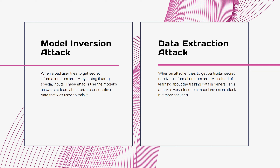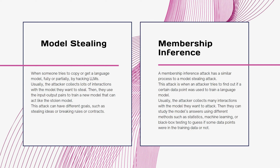A data extraction attack is similar to a model inversion attack but more focused. Instead of learning about training data in general, a data extraction attack tries to get particular secrets or private information from an LLM, such as API keys, passwords, or credit card numbers. This can be done by probing the LLM and using its output to recover some of the training data. For example, an attacker could extract training data from OpenAI Codex, an LLM that powers GitHub Copilot. If the LLM is trained on private repositories containing production secrets, a malicious user might learn private API keys.